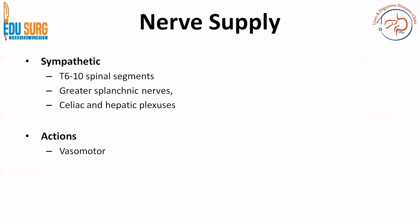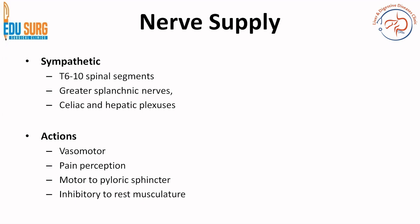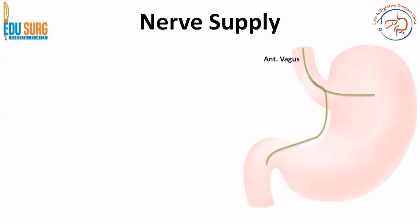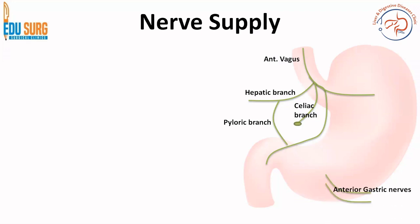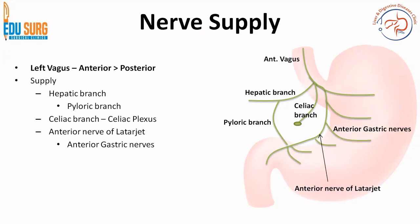Sympathetic is the fight or flight response. At that time the vasomotor supply is strong, and pain perception will also be there, but it is motor to the pyloric sphincter and inhibitory to the rest of the musculature. So sympathetic basically gives rest to the GI system and diverts blood supply to the peripheries for fight and flight. Coming to the parasympathetic and motor supply: the vagus basically gives a hepatic branch and a celiac branch. There are two vagus nerves — left and right. The left predominantly gives the anterior vagus and the right predominantly gives the posterior vagus.